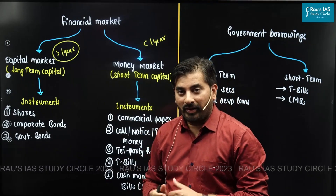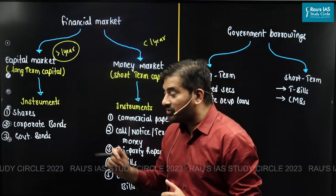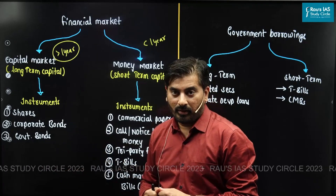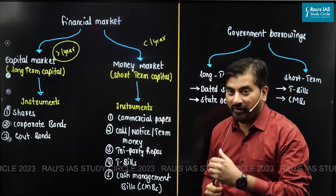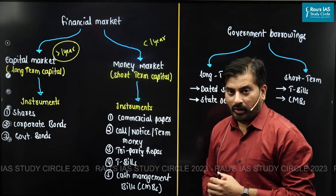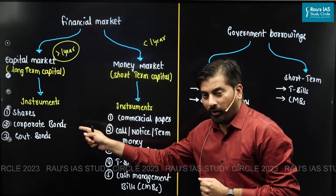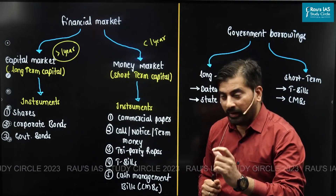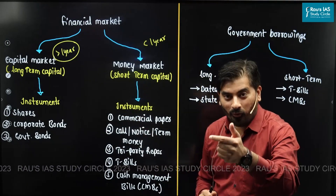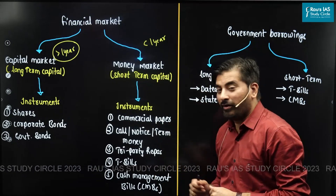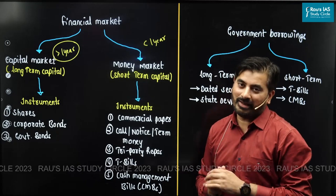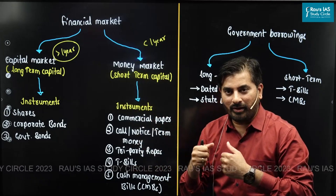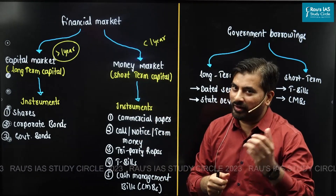Within the capital market, we have different instruments like shares, corporate bonds, as well as government bonds. Whereas in the money market, you have different instruments like commercial paper. One fundamental difference between a corporate bond and commercial paper is in terms of maturity period. The maturity period of a corporate bond is usually more than one year, while the maturity period of commercial paper is usually less than one year. A corporate entity can issue either a corporate bond to raise long-term capital or a commercial paper to raise short-term capital.